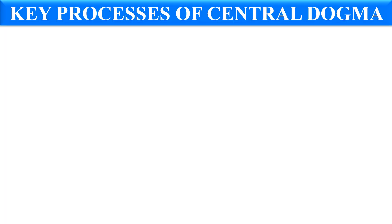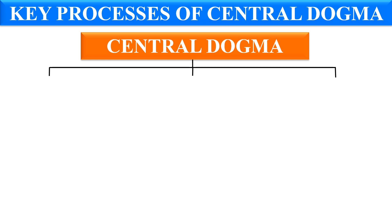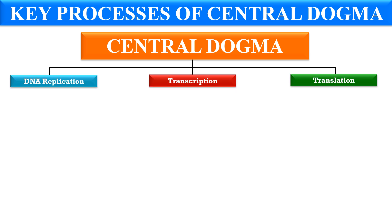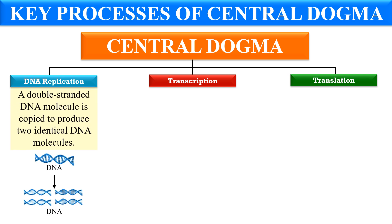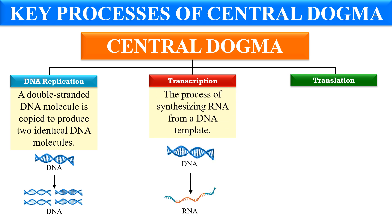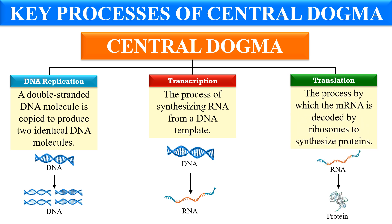Now, what are the key processes involved in the central dogma? There are basically three processes: first is DNA replication, then transcription, and then protein translation. In DNA replication, the DNA gets multiplied — it produces identical copies of itself. In transcription, the DNA is converted into RNA. And in translation, this RNA is converted into protein. These three are the key processes involved in the central dogma.